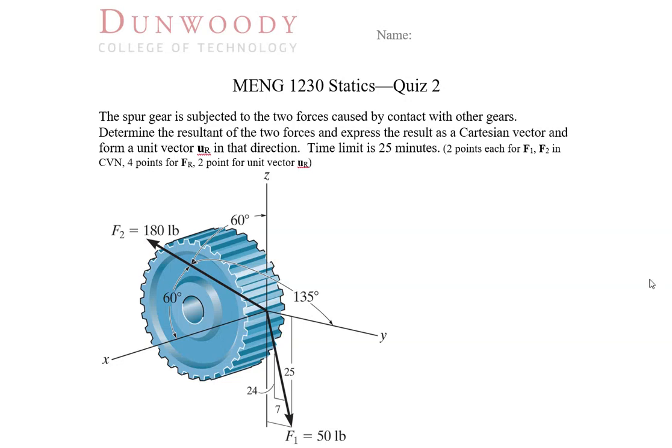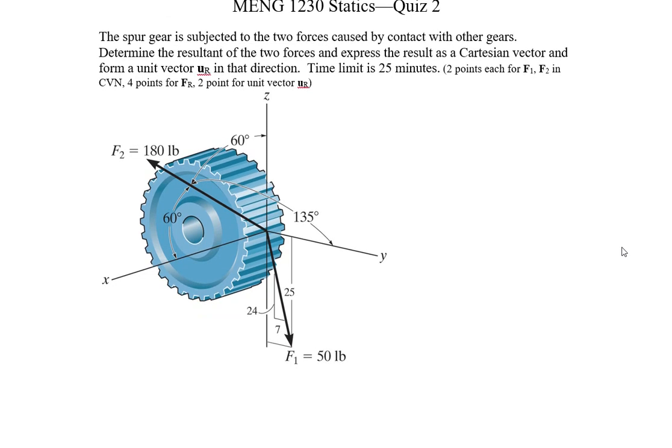Okay, so we'll walk through the solution to statics quiz 2. In this problem, we have a gear with a couple forces acting on it. We have one force acting in the YZ plane, acting down with a magnitude of 50 pounds. And then in all three directions we have F2, and we're given coordinate direction angles for F2. Looking at the problem description, we're looking for the resultant force of the two forces, and we want to express that in Cartesian vector form as well as a unit vector UR.